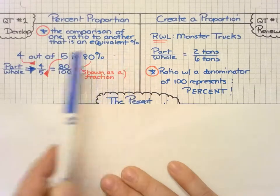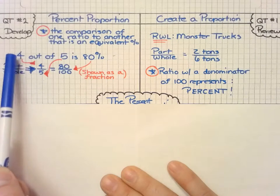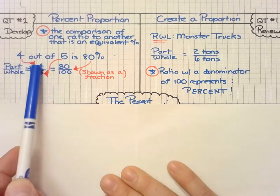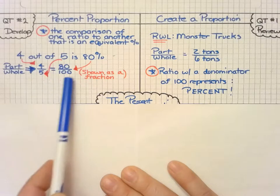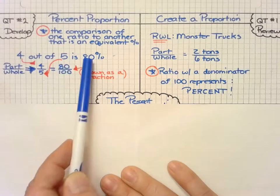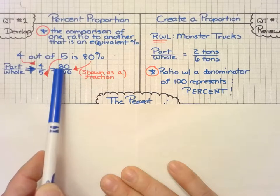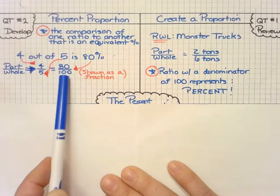But say we didn't know that. For more complicated problems, we can take our part, which is four out of the whole, which is a total of five, and set that equal to a percentage. We can represent that percentage as a ratio, a fraction 80 over the total 100.